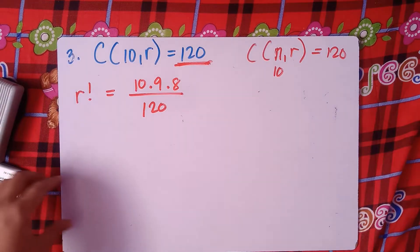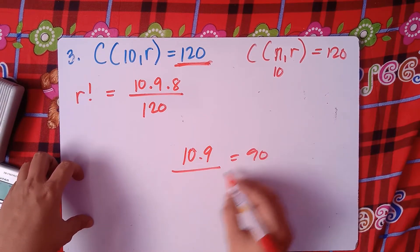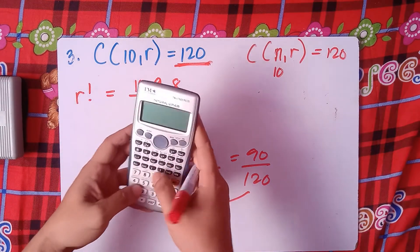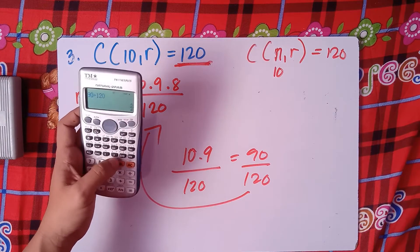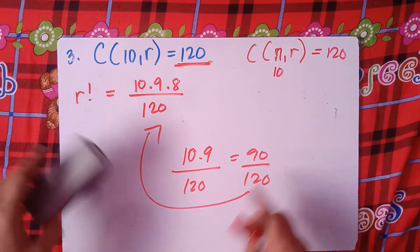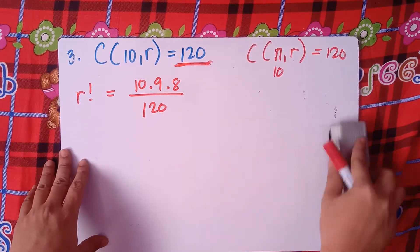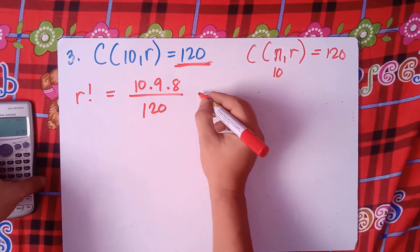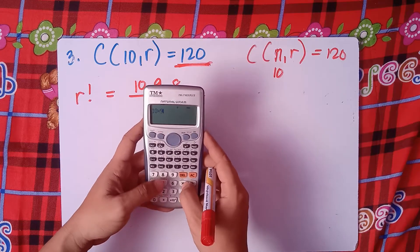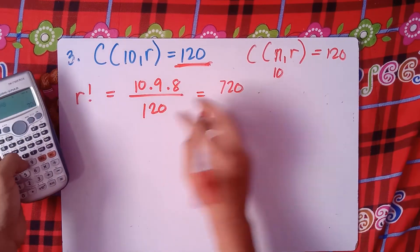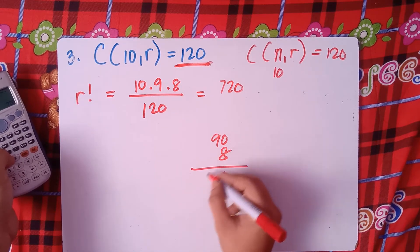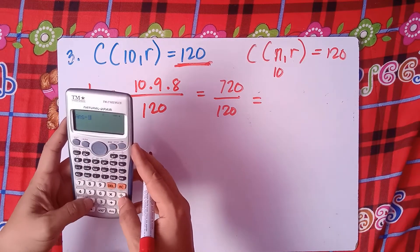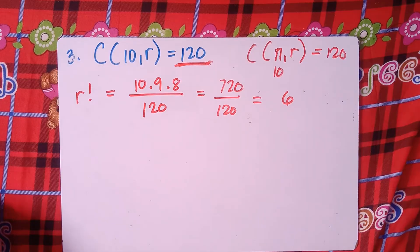We try 10 × 9 × 8 = 720. Then 720 ÷ 120 = 6 — a whole number! So the product of consecutive numbers 10 × 9 × 8, divided by the combination answer 120, gives us 6. But we're not yet done because our r here is factorial, so we need to find which factorial equals 6.